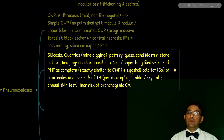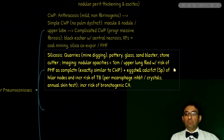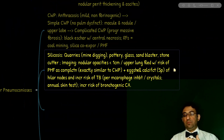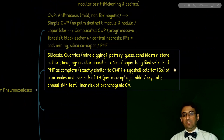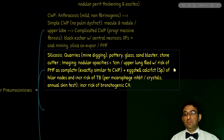In addition to the general work-up and treatment of interstitial lung disease and pneumoconiosis, what additional follow-up is required for silica exposure? Annual TB testing, such as TB skin test.